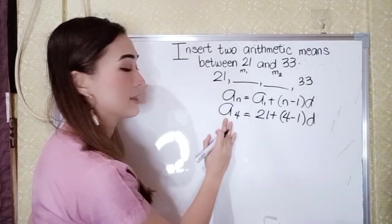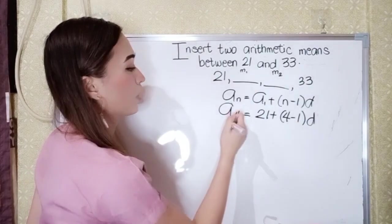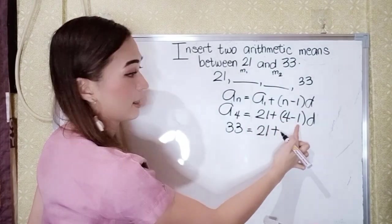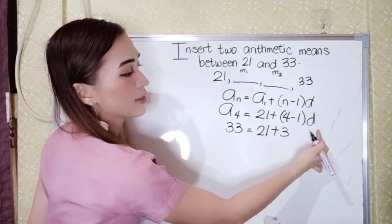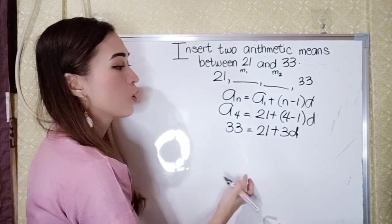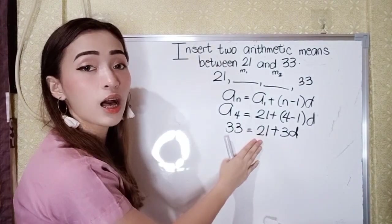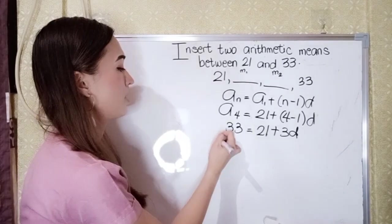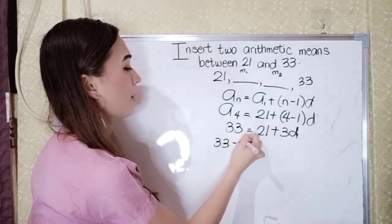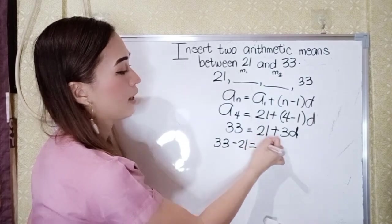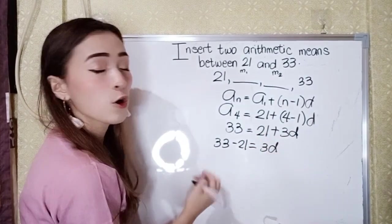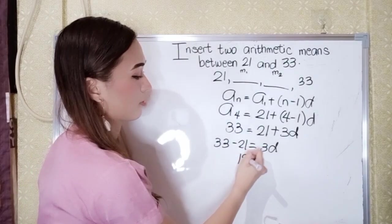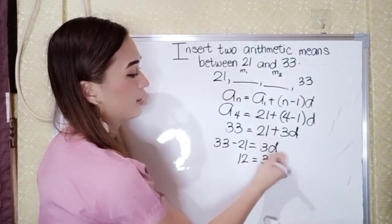Next is, what is our A sub 4? So our A sub 4 is 33, 21, plus 4 minus 1 is 3 times D is 3D. So to get D, just transpose 21 to the left. So it will become negative 21. So 33 minus 21 equals 3D. So 33 minus 21 is 12 equals 3D.